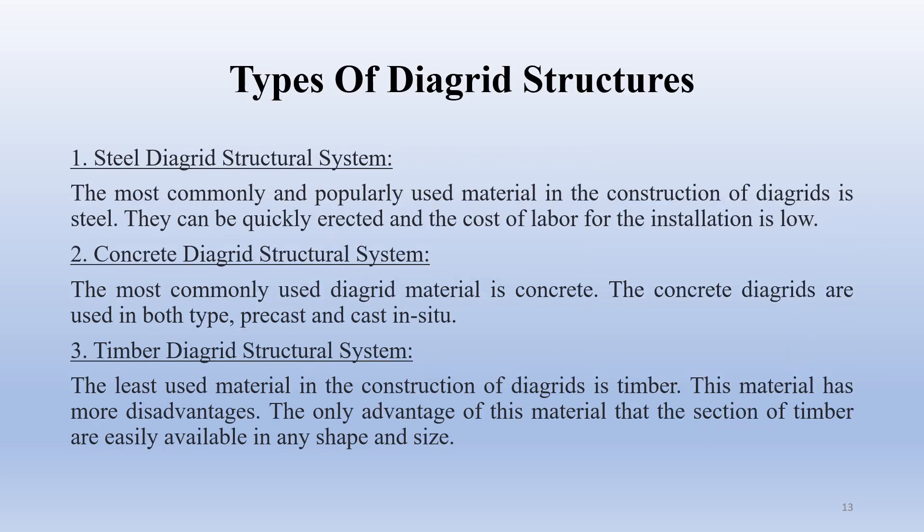Let's learn about the different types of diagrid structure. Classification of diagrid structure based on the material used: first, steel diagrid structure system; second, concrete diagrid structure system; third, timber diagrid structure system. Steel is the most commonly and popularly used material in the construction of diagrid. Steel diagrid structures can be quickly erected and the cost of labor for installation is low. Concrete is also commonly used; concrete diagrid are used in both pre-cast and cast-in-situ forms. Timber is the least used material in diagrid construction, as it has more disadvantages. The only advantage of timber is that sections are easily available in any shape at the site.